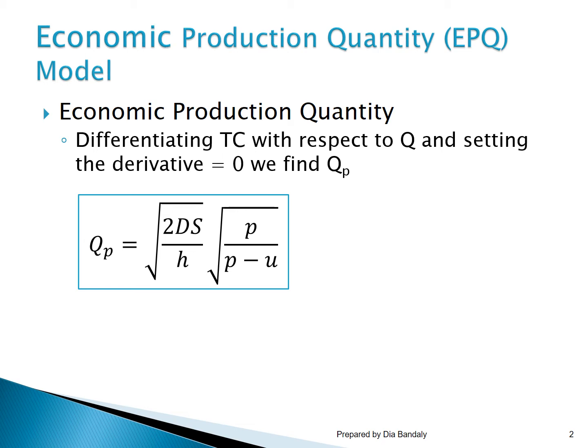The first term of the EPQ formula is familiar because it is exactly as in the EOQ: two times the annual demand times the setup cost. Then we have the holding cost H. We also multiply by the square root of the production rate P over P minus the consumption rate U in the denominator. There are two more equations to learn: the production runtime and the cycle time.